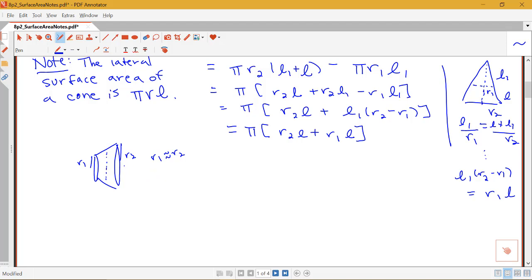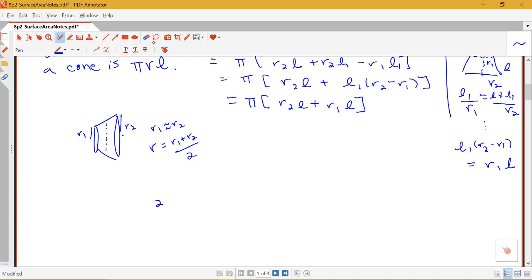So if we let R be equal to the average of these two things, then we could call 2 times R are R1 plus R2. So that allows us to write down the following formula where I have 2πRL.